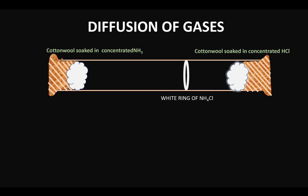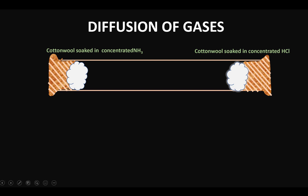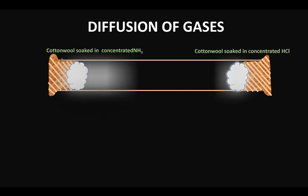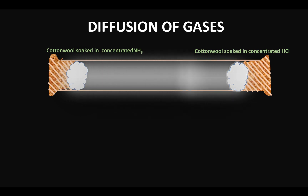Now observe carefully what happens to the tube. In some time you can see something diffusing from the left and the right, and that is leading to the formation of this white colored ring of ammonium chloride.